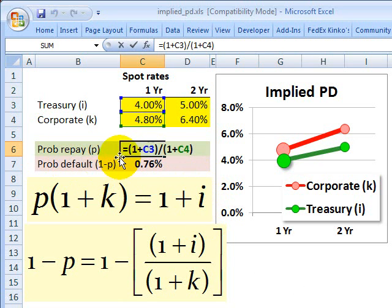In the probability of repayment, I just divided. I took 1 plus the treasury and divided by 1 plus the corporate spot rate to get my probability of repayment is 99.24%, my implied.